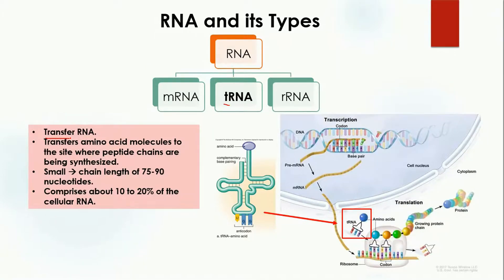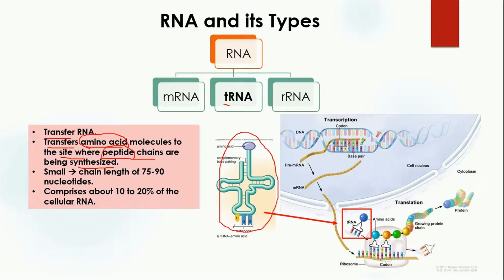The second type of RNA is tRNA, where 't' stands for transfer. As the name indicates, it transfers something from one part of the cell to another. Transfer RNA carries amino acid molecules to the site where peptide chains — that is, proteins — are being synthesized. It picks up amino acids and delivers them to the site of protein synthesis.